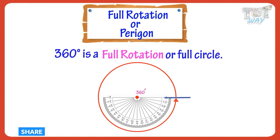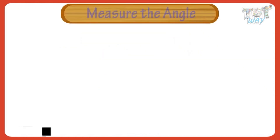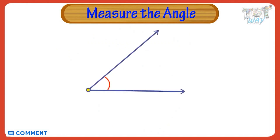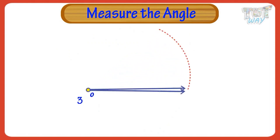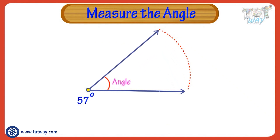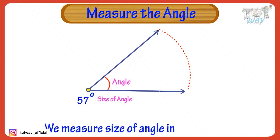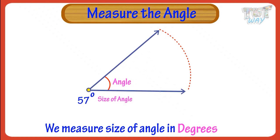360 degrees is a full rotation, or a full circle. Now let's see how we can measure angles. The amount of turn from one arm to the other arm in an angle is called the size of the angle. We measure the size of angles in degrees. The symbol for degree is this.